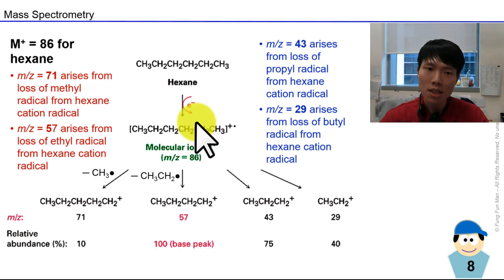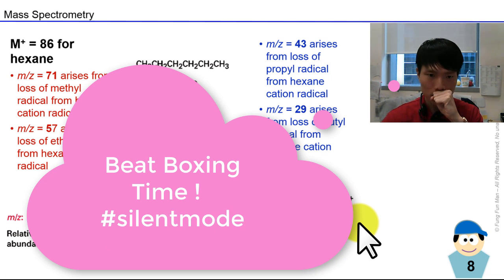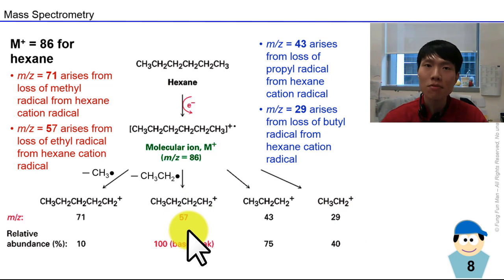Now if we cut the next carbon from the beginning, we are losing 29. And 29 is always characteristic of a C2H5 part, the ethyl radical. And if we choose to cut it right in the middle, it becomes symmetrical. We are losing 43. 43 represents a propyl radical. So hence we have these numbers here. And how do we get 57? 57 is when we cut away the ethyl group. So it all matches up here.